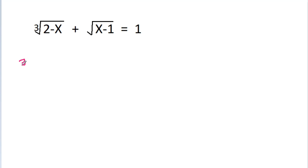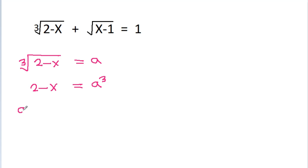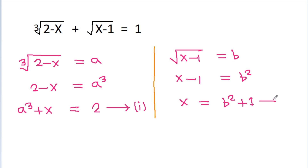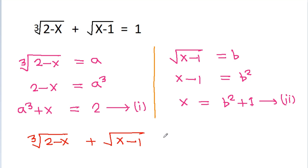If we take cube root of (2 minus x) as a, then we get 2 minus x is equal to a cube, or a cube plus x is equal to 2. Suppose this is equation 1. And if we take square root of (x minus 1) as b, then we get x minus 1 is equal to b squared, or x is equal to b squared plus 1. Suppose this is equation 2. We have given that cube root of (2 minus x) plus square root of (x minus 1) is equal to 1, so a plus b is equal to 1. Suppose this is equation 3.